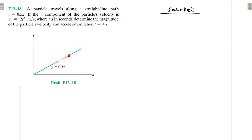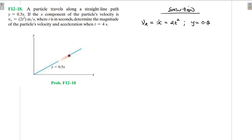So I've been given the velocity in the x direction, which is x-dot = 2t², and we are asked to find the particle's velocity and the acceleration when t = 4 seconds. And we've got y = 0.5x.